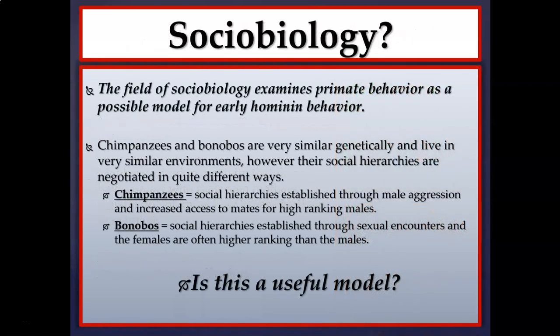The field of sociobiology examines non-human primate behavior as a possible model for early hominin behavior. Chimpanzees and bonobos are very similar genetically and live in very similar environments; however, their social hierarchies are negotiated in quite different ways. Chimpanzees tend to have social hierarchies established through male aggression and dominance, with high-ranking males having increased access to mates and food resources. Chimpanzees tend to be more brutal and have more complex dominance hierarchies.